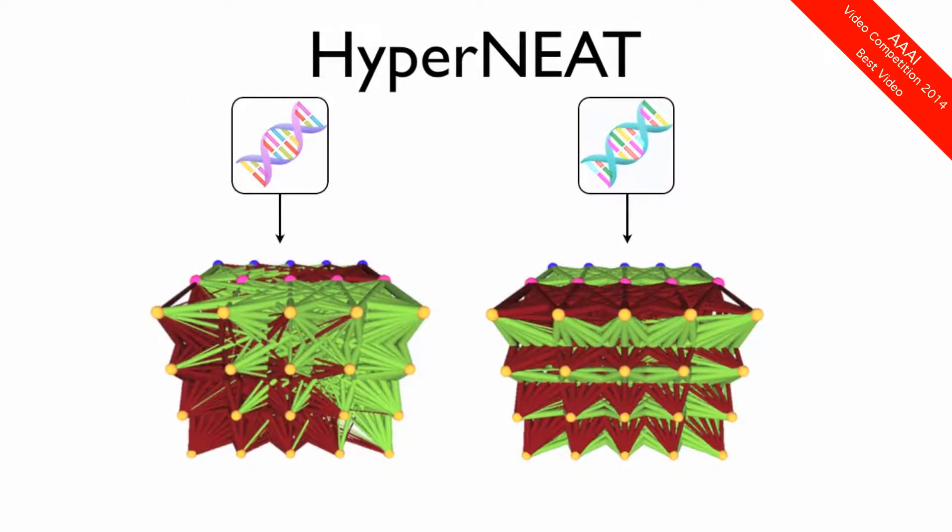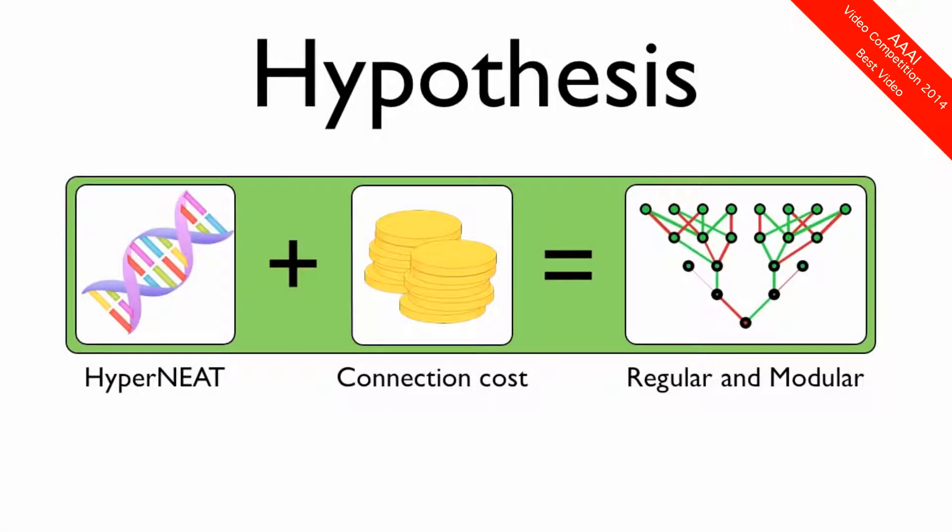For our research, we made use of the powerful HyperNEAT algorithm, which is highly effective at creating regular artificial neural networks. Now, it has already been shown separately that the connection cost leads to modularity and that HyperNEAT produces regular networks. However, in this research we examined whether HyperNEAT plus a connection cost does indeed lead to regularity and modularity in the same neural network.